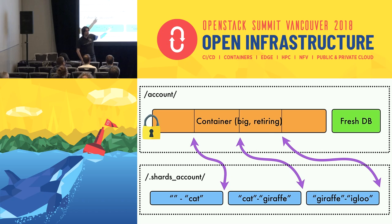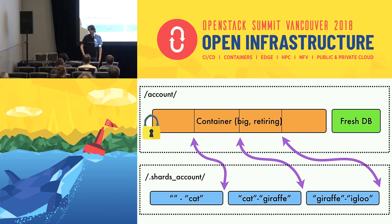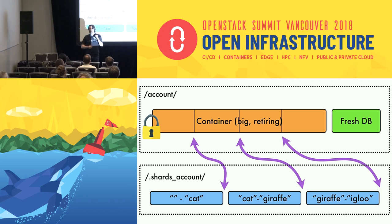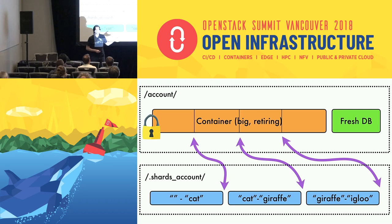This is a huge, extremely complicated feature. It's taken us four years to write, review, and land, and it's now 10% of Swift's code base. One of the important reasons it matters is that it relieves pressure on operators. Another major point is that this allows people to start using Swift exactly as they would use S3 — putting a billion objects into a bucket. That's how S3 recommends you do it. You can now do that with Swift.